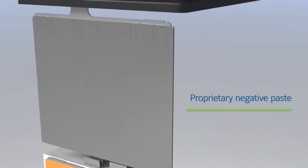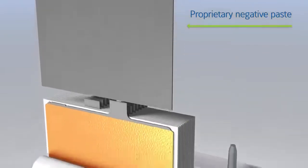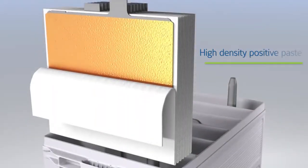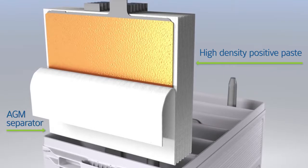Our proprietary negative paste accepts a charge quicker, so the battery recharges faster. Our high-density positive paste improves cycling performance for high accessory applications. And the thick AGM separator is made of glass microfibers, which absorb the acid and prevent spilling.